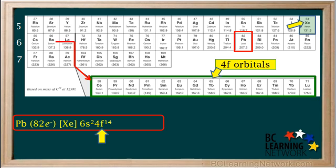Next, we add 4f¹⁴, which are filled after the 6s. The reason it goes from barium straight to the 4f orbitals and skips lanthanum is beyond the scope of this course, so we won't worry about this here.